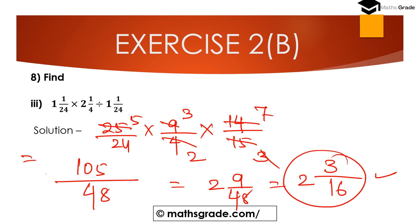So the answer is 2 3/16. Therefore, 1 1/24 × 2 1/4 ÷ 1 1/14 = 2 3/16. This is the mixed fraction and this is the answer.